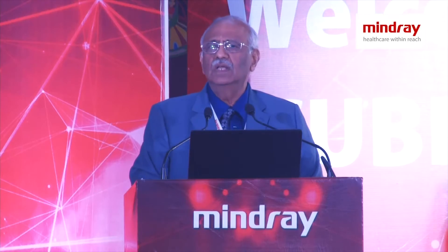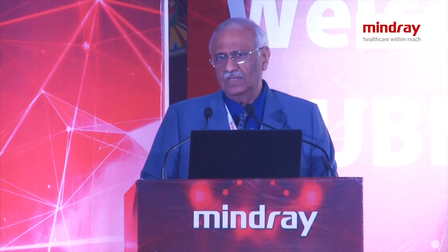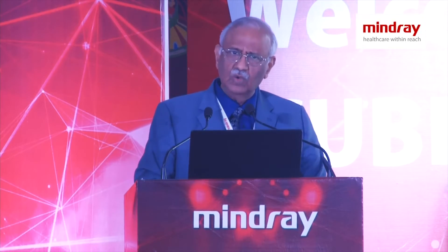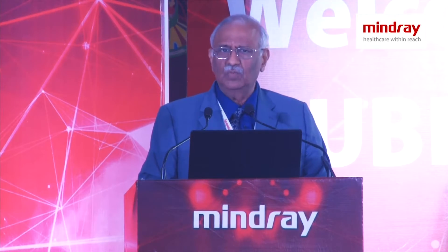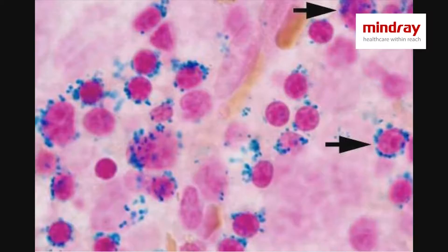Is this refractory anemia with ring sideroblasts? No, because 6% ring sideroblasts are not adequate to make this diagnosis. To diagnose RARS, you require anemia and dyserythropoiesis — he has both — but you require 15% or more ring sideroblasts. This could be a diagnostic slide of RARS, but our patient didn't have this.